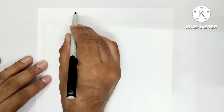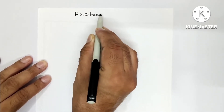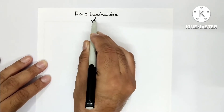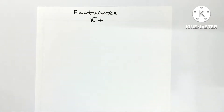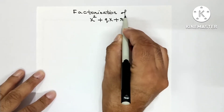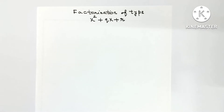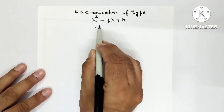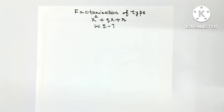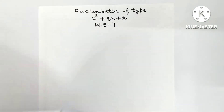Hello everyone, today we are going to do factorization of the type x square plus px plus qr. We will be doing worksheet number 7, which is based on this type of factorization. This worksheet has a total of 16 questions. So let's start.